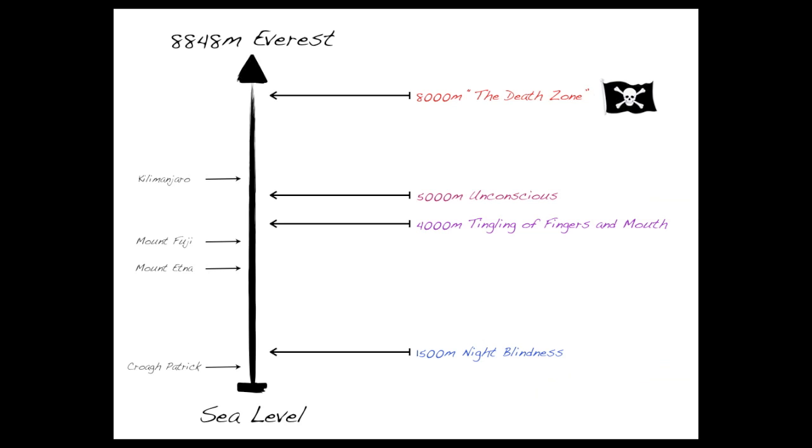Without acclimatisation, the first manifestation of hypoxia appears at about 1500 metres in the form of altered night vision. By 4000 to 5000 metres, people begin feeling tingling of fingers and mouth. At altitude greater than 5000 metres, some people would begin becoming unconscious, and at greater than 7000 metres, most people would be unconscious.